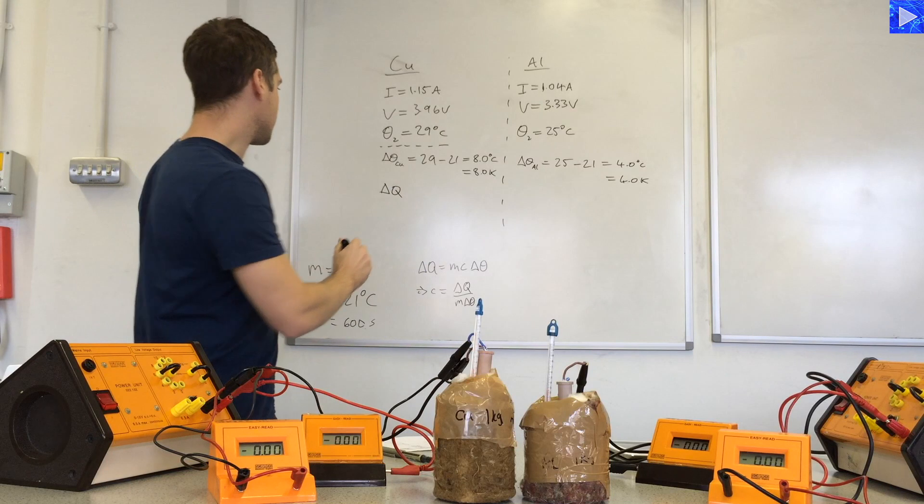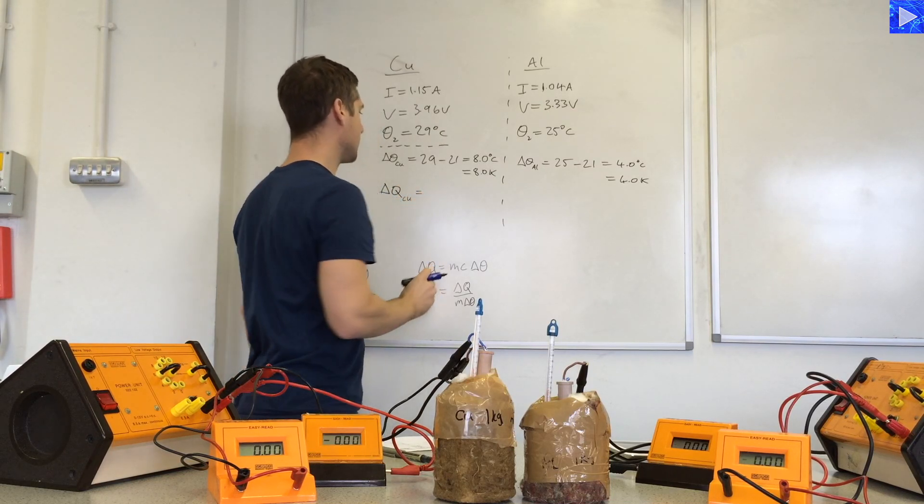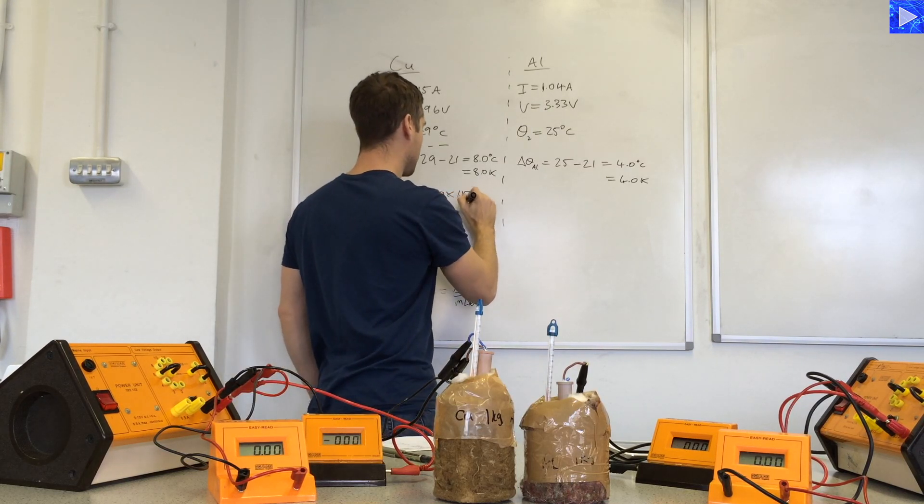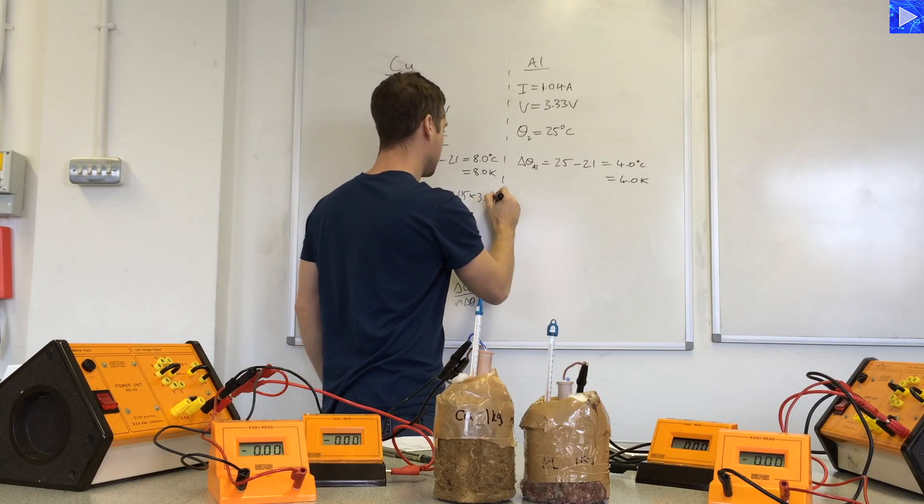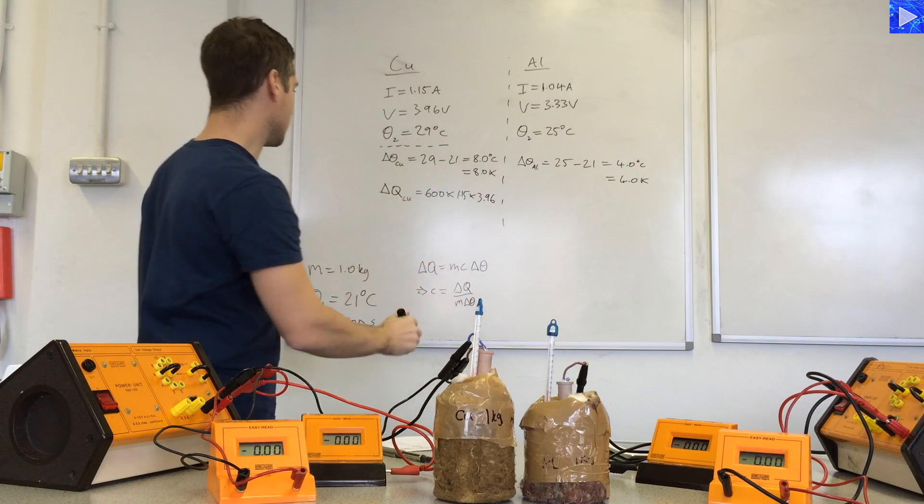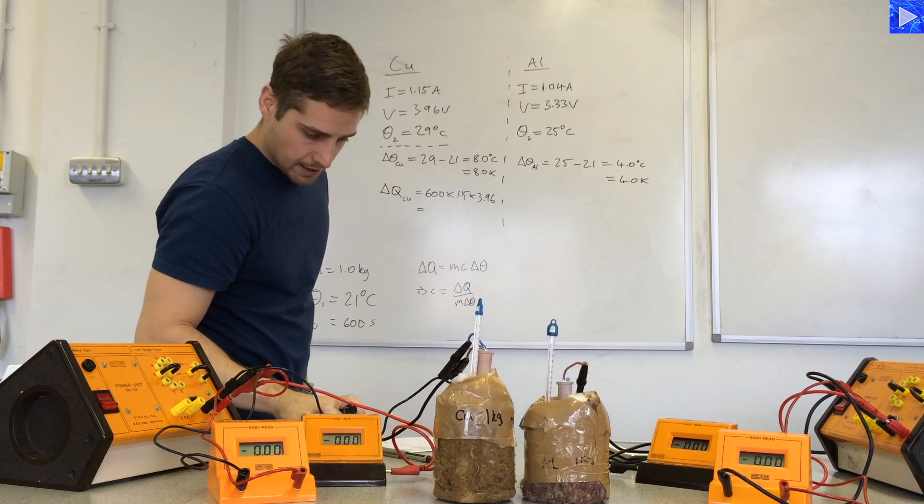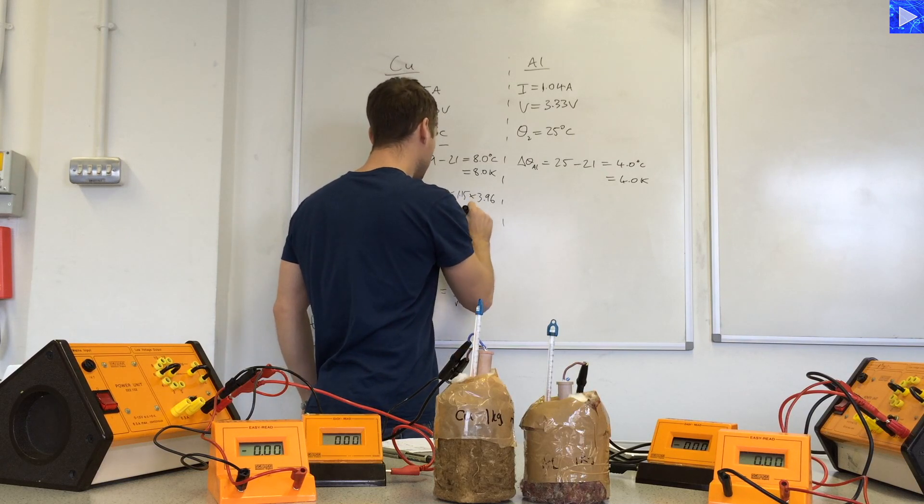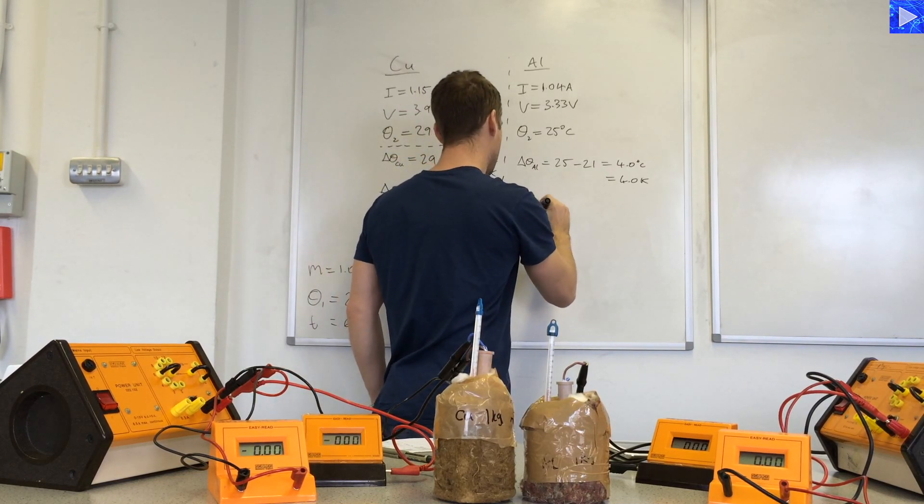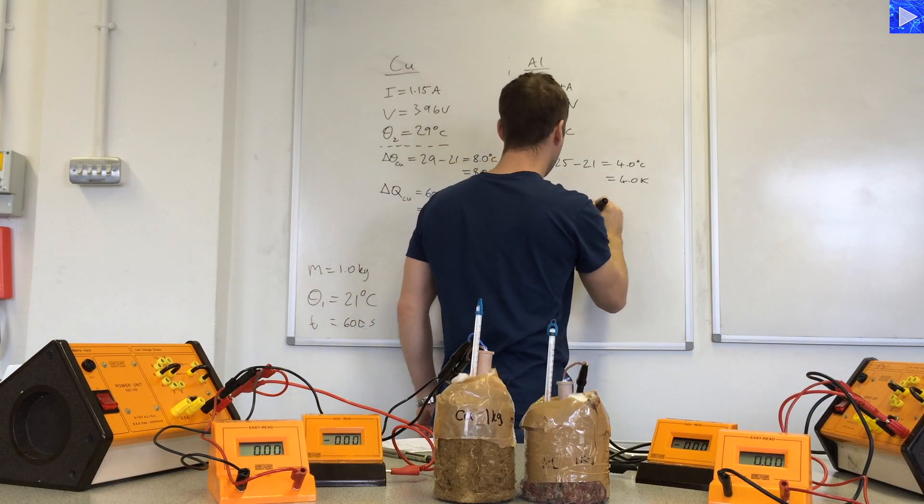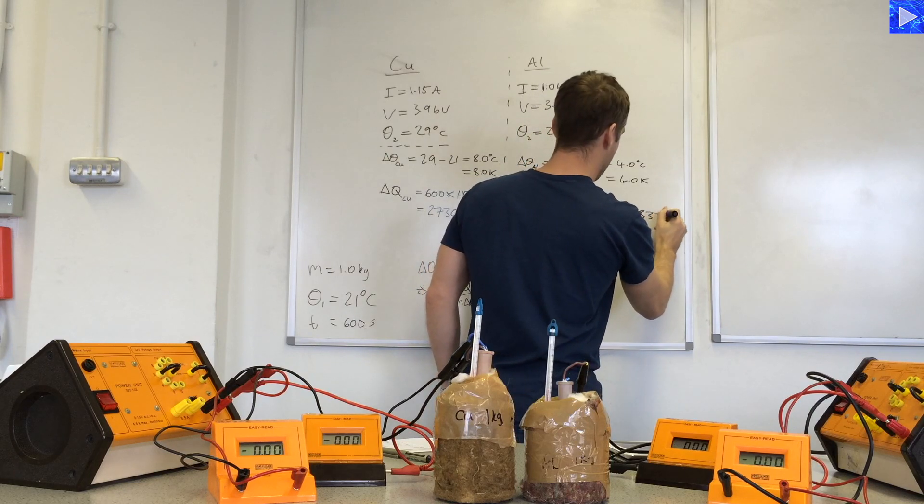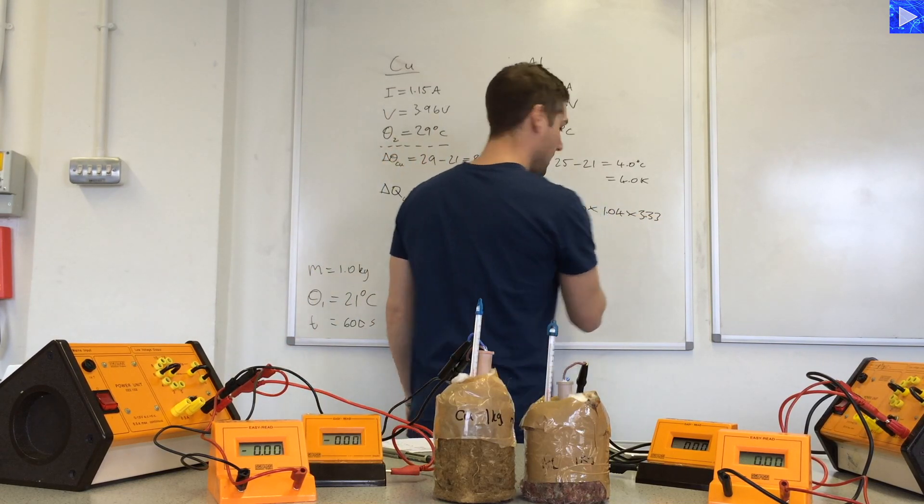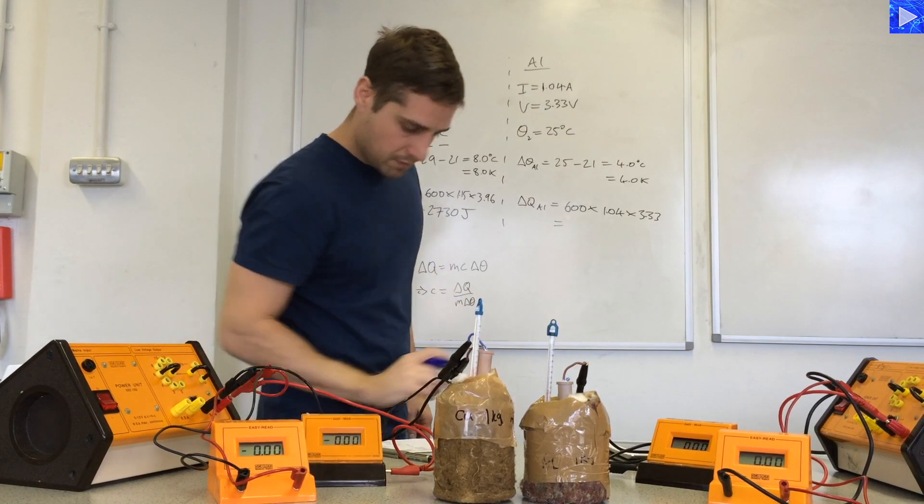The heat supplied for the copper block was the time, 600 times the current times the voltage. And that comes out as 2,730 joules. And the same procedure for the aluminum block, the current times voltage. And that comes out at 2,076 joules.